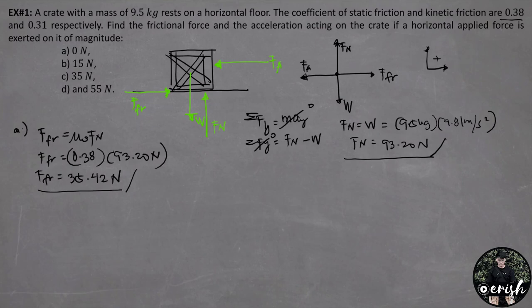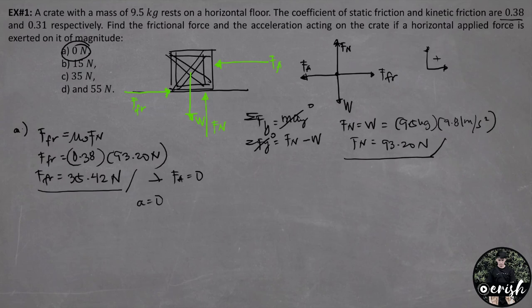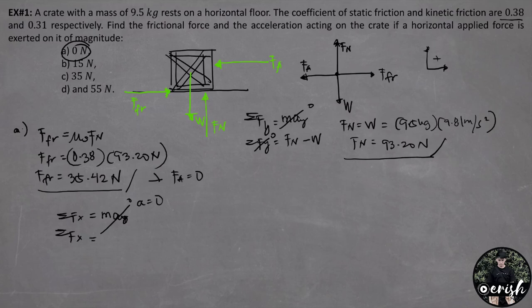For letter A, the applied force is 0 N. Since the static friction force of 35.42 N is larger than the applied force, the crate will not move. Therefore, the acceleration is 0. By summation of forces at the x-component with no acceleration, force of friction minus force applied equals zero, so the force of friction equals 0 N.